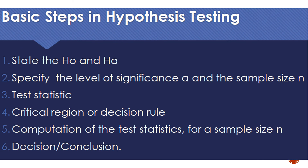There are basic steps in hypothesis testing. The first step is to state the null and alternative hypothesis. The second is to specify the level of significance alpha and the sample size n — in most cases these are given. Third, identify the test statistic to be used. Fourth, determine the critical region and state the decision rule. Fifth, compute the test statistic for the sample size n. And finally, make the decision or conclusion.